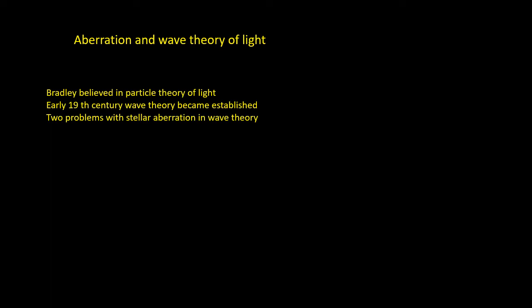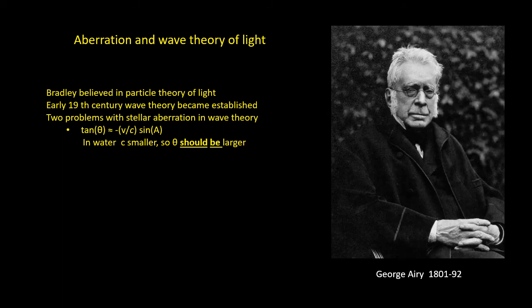Firstly, the aberration angle theta varies with the speed of light C. In the wave theory, light travels more slowly in air than it does in vacuum, but the difference is small. In a denser medium, the slowing is actually quite significant. So when light passes through water, for instance, it travels 1.3 times more slowly than it does in a vacuum. So if we filled a telescope with water, the aberration angle ought to be 1.3 times larger than if it's filled with air. This water-filled telescope experiment was first performed by George Airy back in 1871, and no difference was observed.